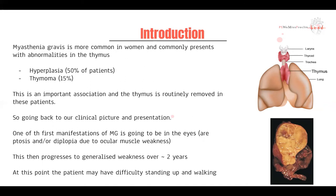If they have a thymoma, which is a mass, you want to remove that. However, even if they don't have a thymoma just yet, most patients with myasthenia gravis still have their thymus removed. Going back to our clinical presentation, one of the first manifestations of myasthenia gravis tends to be in the eyes, which is why it quite commonly presents with ptosis or diplopia, because you have weakness in the ocular muscles.